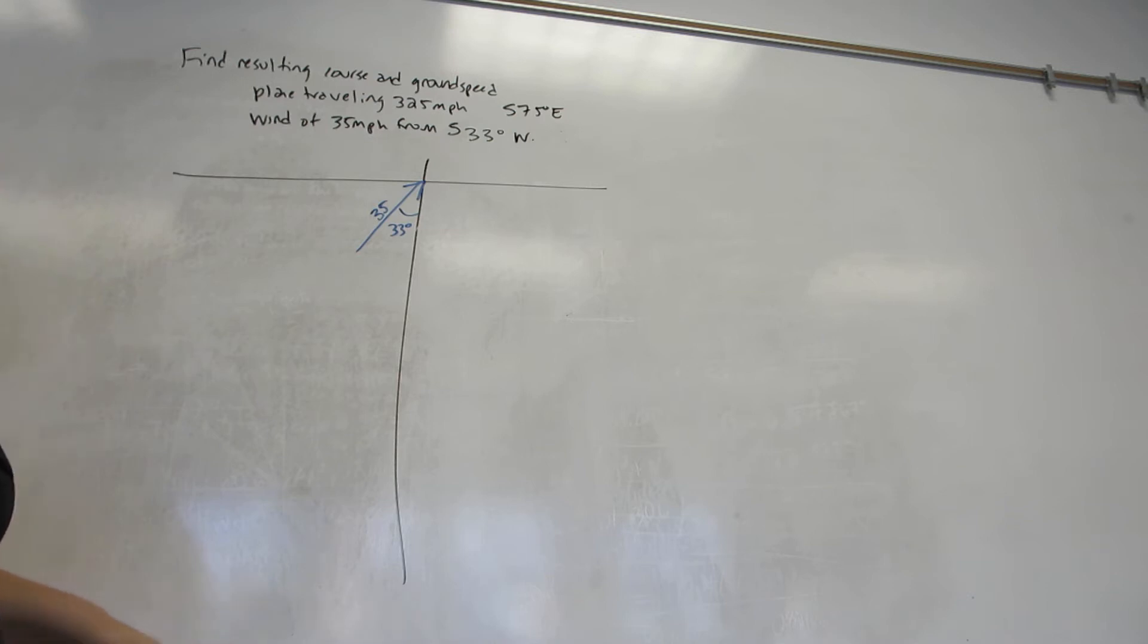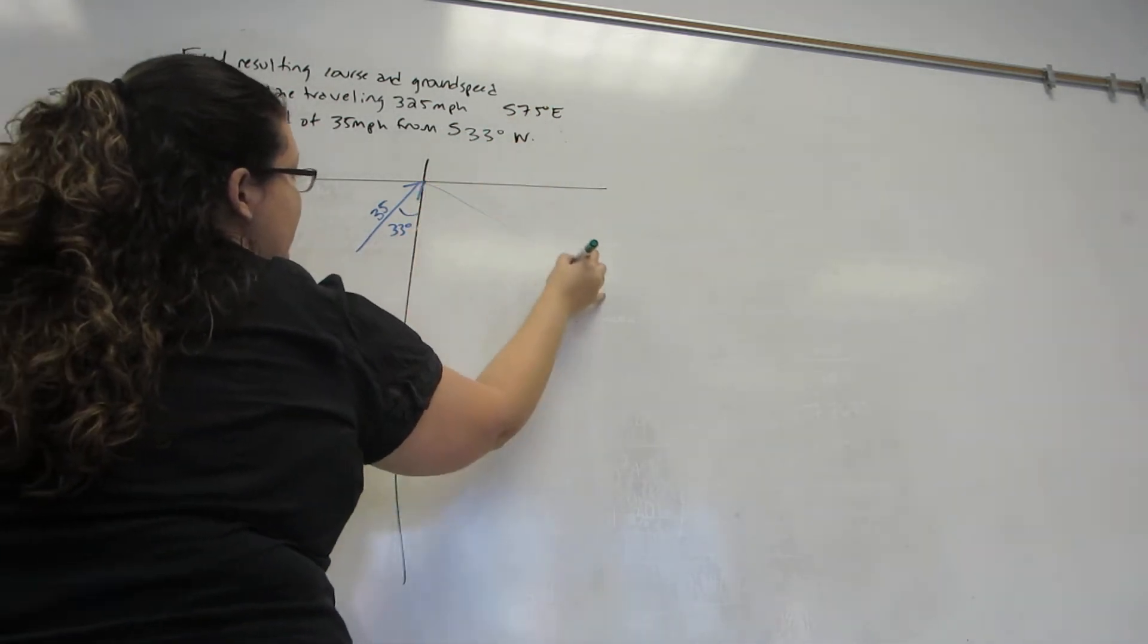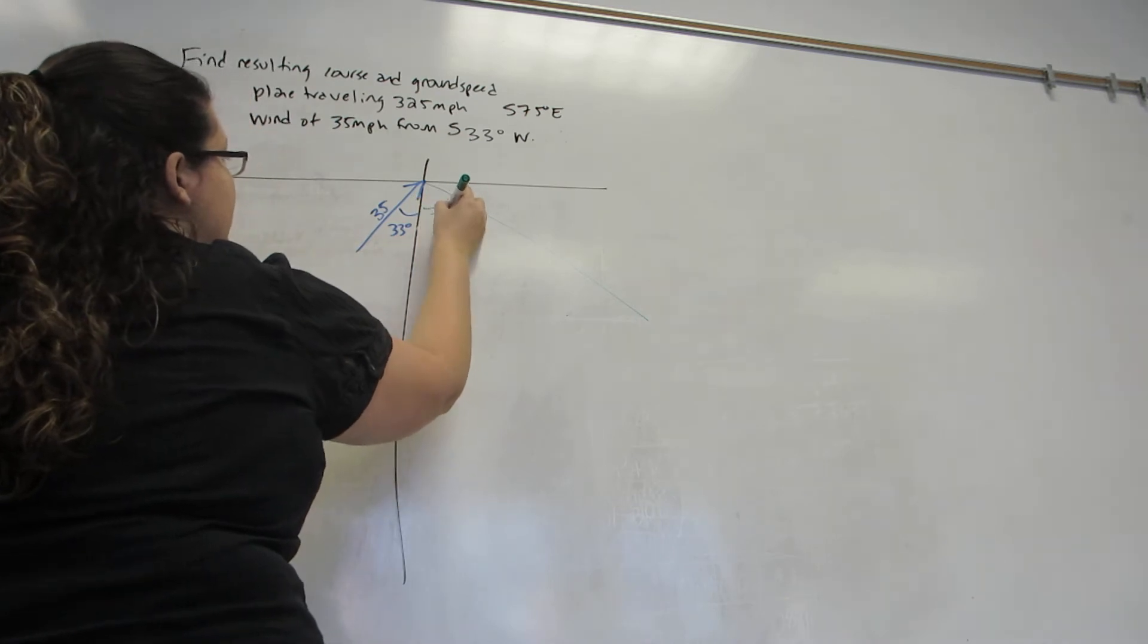Now I'm going to place my airspeed. Airspeed is what the plane thinks it's traveling. So I'm going to start at south and go 75 degrees towards east.